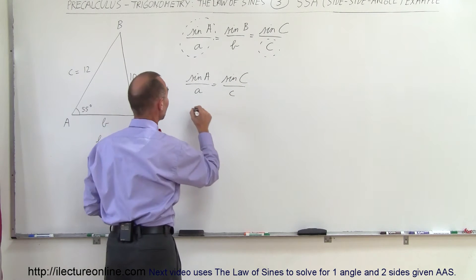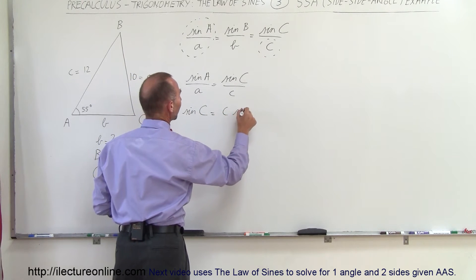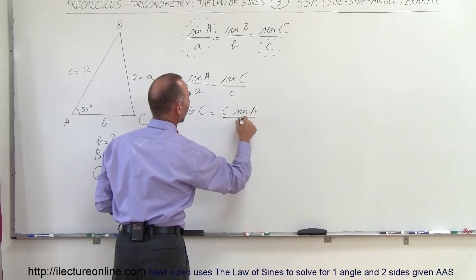So we can write this as sine of A divided by A equals sine of C divided by side C. Isolate the sine of C, so now we get the sine of C is equal to C times the sine of A divided by A.